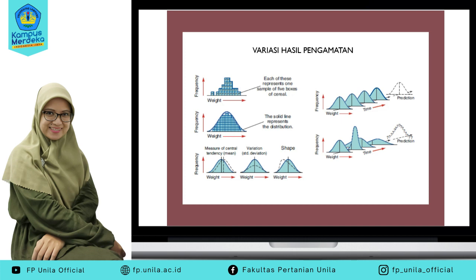Yang kedua, bisa kita lihat dari perbedaan standar deviasi, yaitu variasi dari nilai yang didapat. Ada dua grafik: yang satu sangat tinggi puncaknya, dan yang satunya lagi agak sedikit lebih rendah dengan batasan bawah yang lebih lebar. Ini menunjukkan perbedaan dari standar deviasi yang dimiliki, sementara nilai rata-rata dari kedua grafik tersebut sama. Yang ketiga, yang membedakan adalah bentuknya. Kalau distribusinya normal, dia bentuk lonceng sempurna, tetapi bisa juga berbelok membentuk grafik distribusi beta.